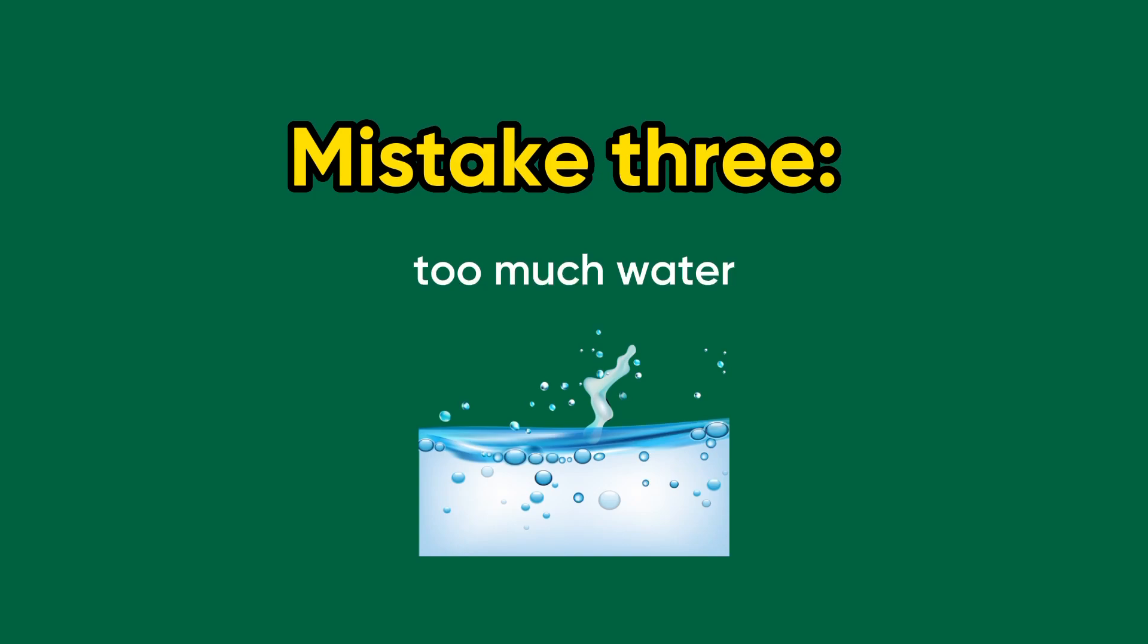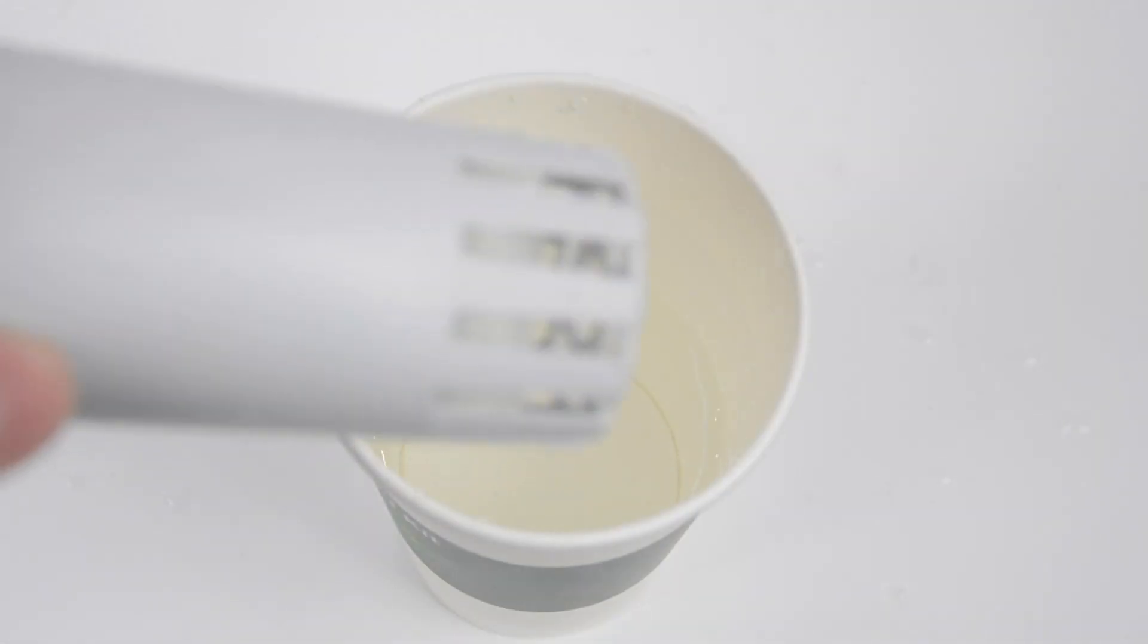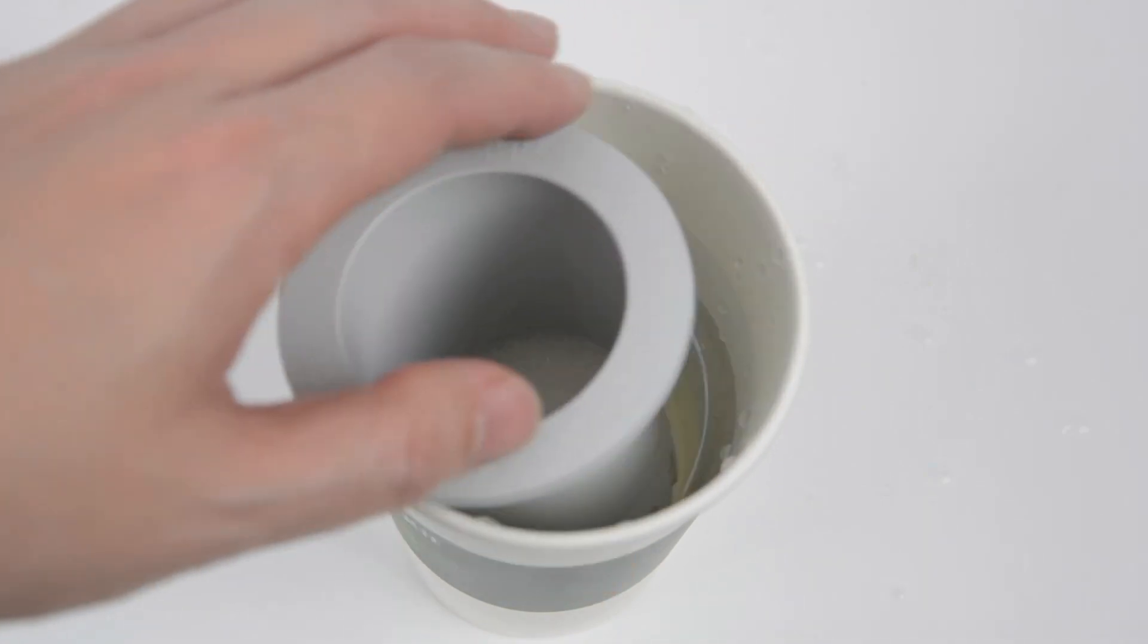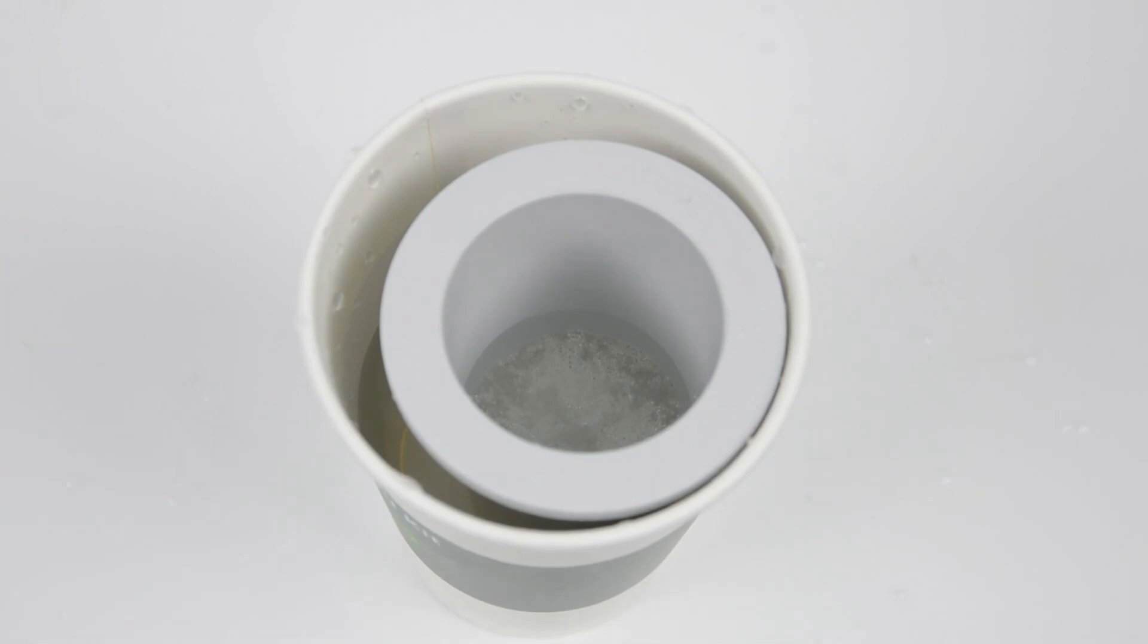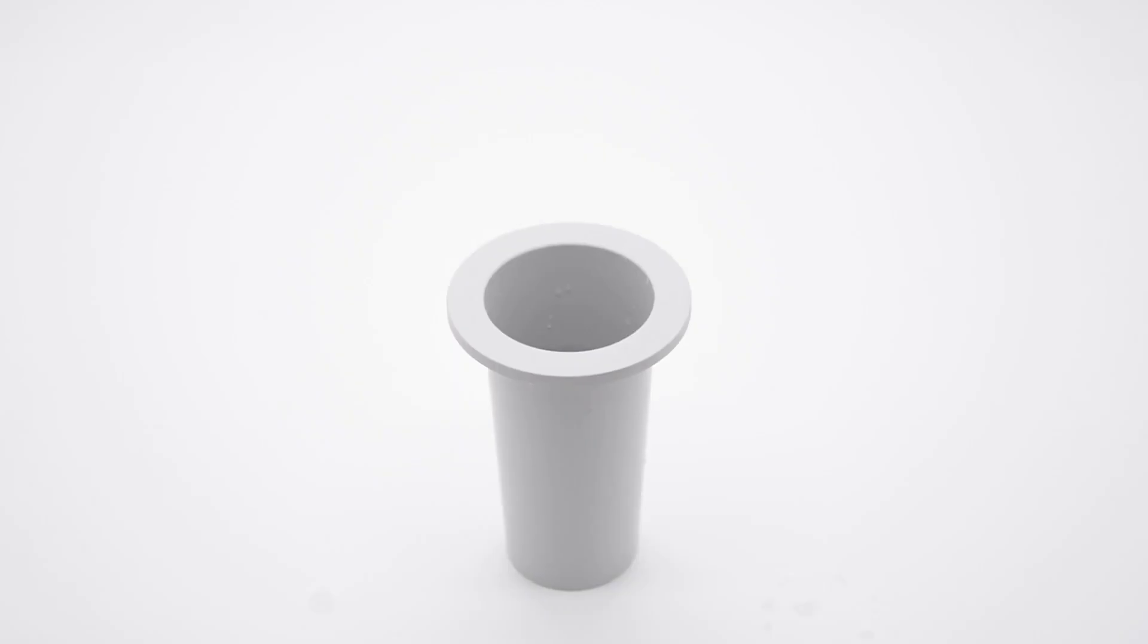Number 3. Watering too much. It can be easy to think more is better when it comes to water, but if you soak your plant in too much water, it will stagnate and stop developing. A few squirts of water every day is enough to keep the sponge moist.